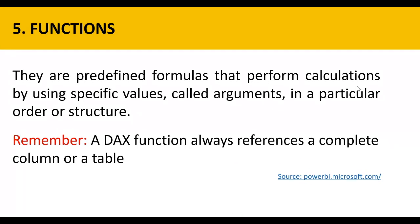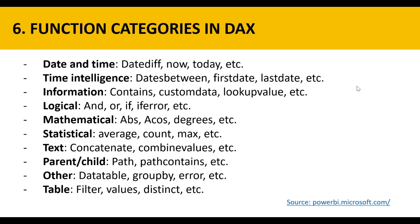Functions are predefined formulas that perform calculations by using specific values called arguments in a particular order or structure. This is really important: a DAX function always references a complete column or a table. Function categories in DAX include date and time, time intelligence, information, logical, mathematical, statistical, text, parent, child, other, and table — and each category has its own functions.